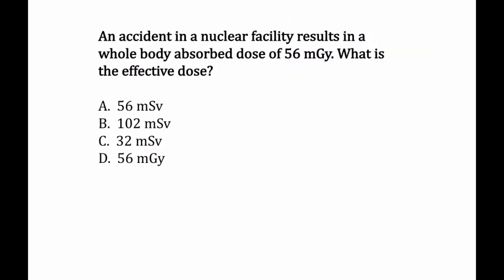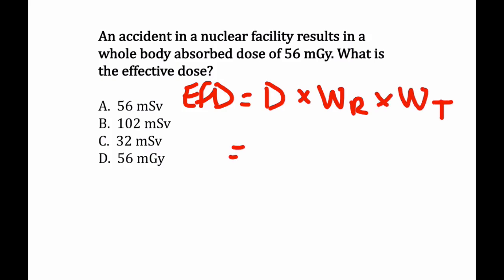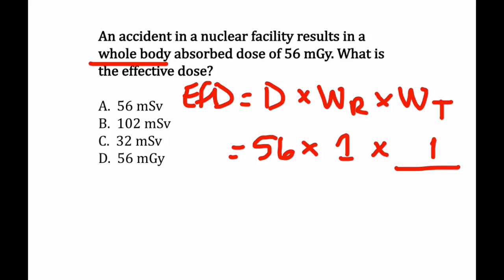Here's the last question. An accident in a nuclear facility results in a whole body absorbed dose of 56 milligray. What is the effective dose? Effective dose equals absorbed dose times radiation weighting factor times tissue weighting factor. The absorbed dose is 56 milligray. We assume x-rays, so the radiation weighting factor is 1. Because this is a whole body exposure, when you add together all tissues of the human body the total tissue weighting factor equals 1. So: 56 times 1 times 1 equals 56 millisieverts — answer A.